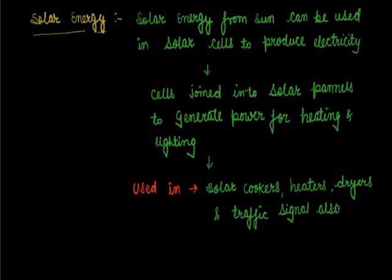A glass frame is placed over the setup so that air can neither come in nor go out, but sunlight enters the closed cavity, gets trapped, and cannot escape. The temperature increases slowly, cooking the rice over a few hours — thus demonstrating how solar energy can be used in cooking. Solar energy has advantages: it is non-polluting and inexhaustible. However, it is considered expensive and a diffused source, so some energy gets wasted.